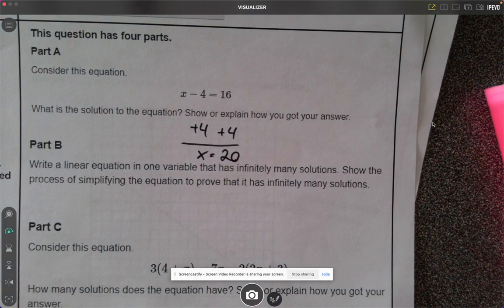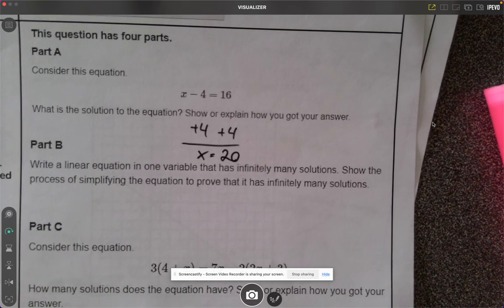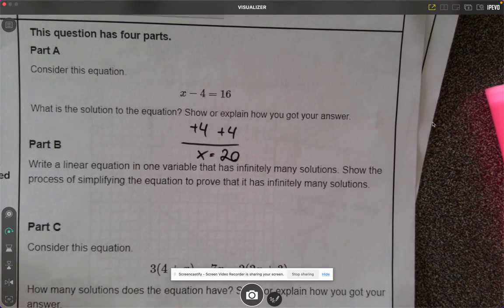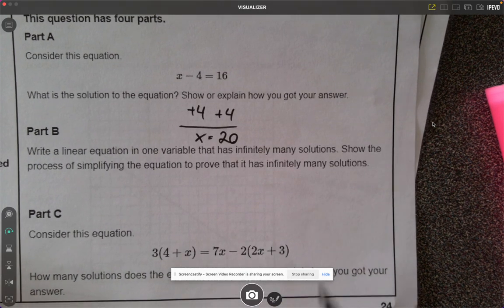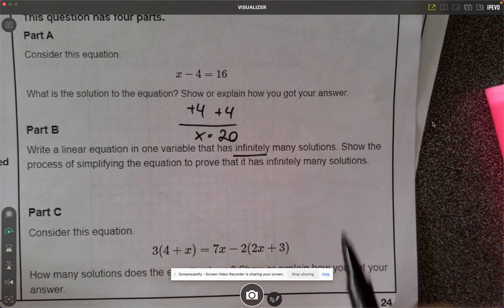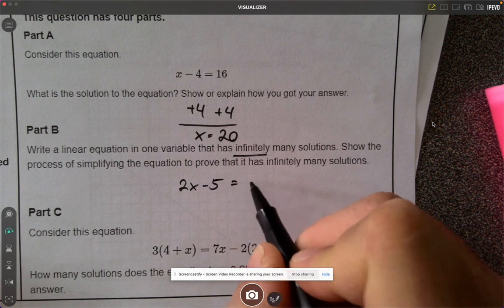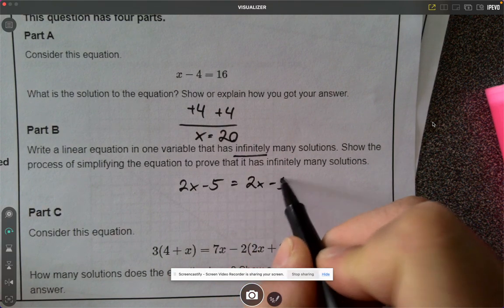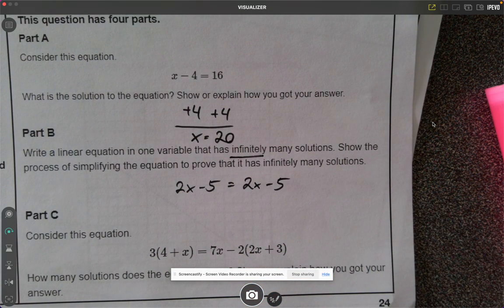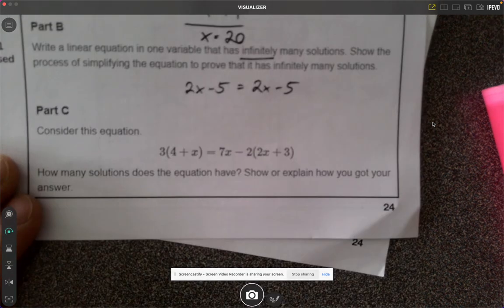Part B. Write a linear equation in one variable that has infinitely many solutions. Infinitely many solutions means identical. So I could write 2x minus 5 equals 2x minus 5. Seems right to me. No mistake there.